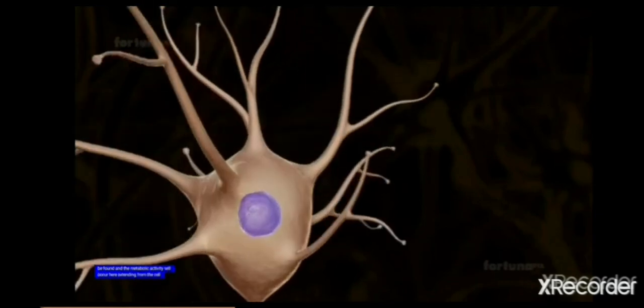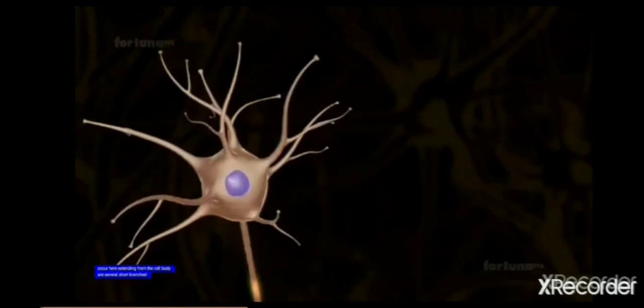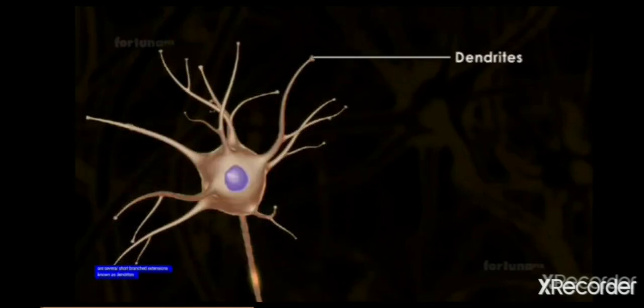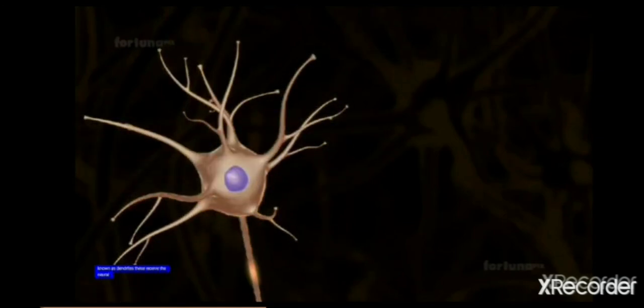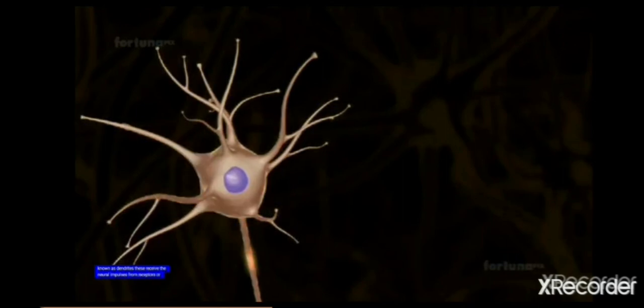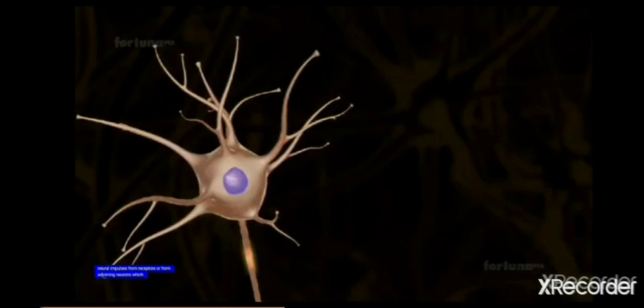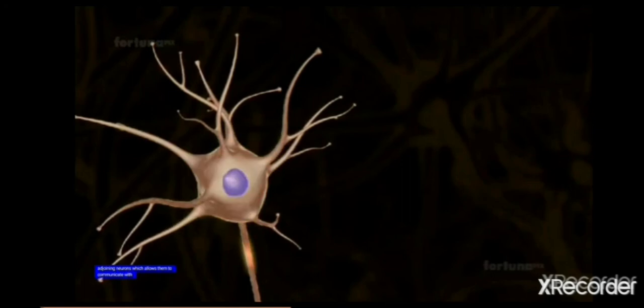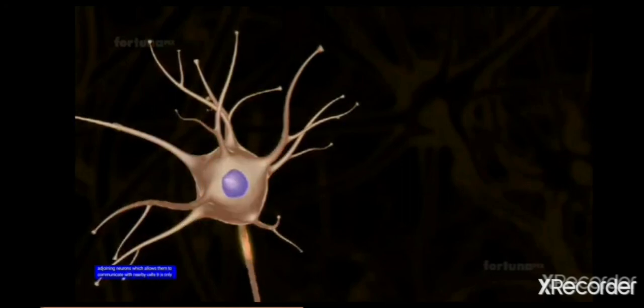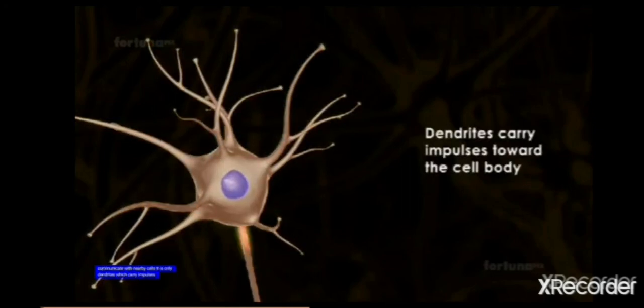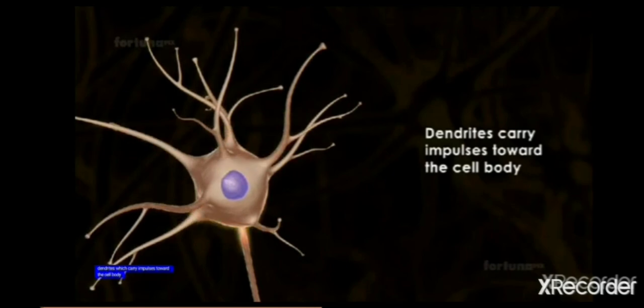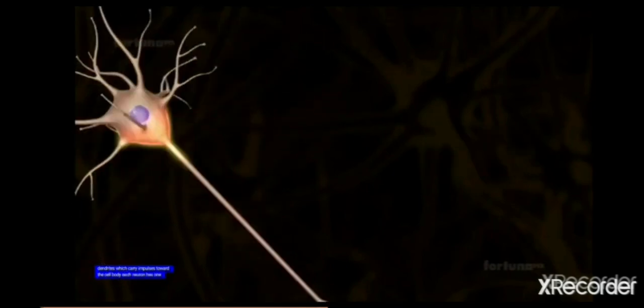Several dendrites arise from the cell body, these are the dendrites, and they take information from the receptors or other neurons and carry information towards the cell body.